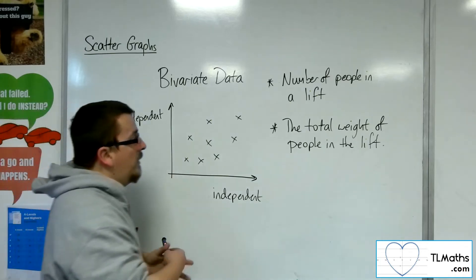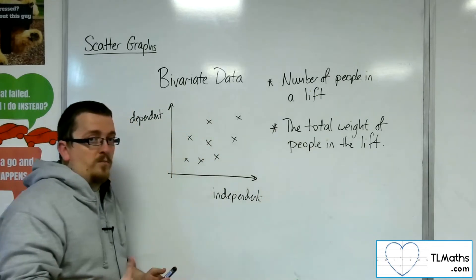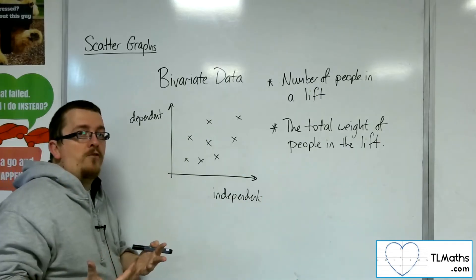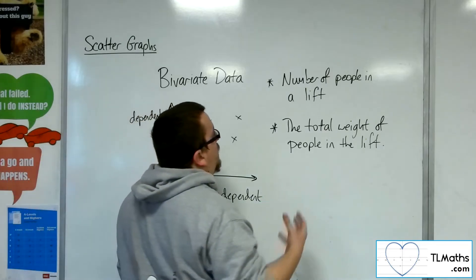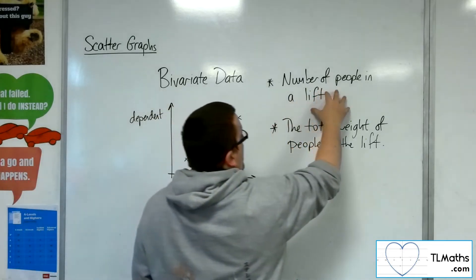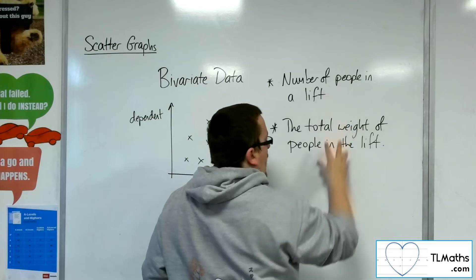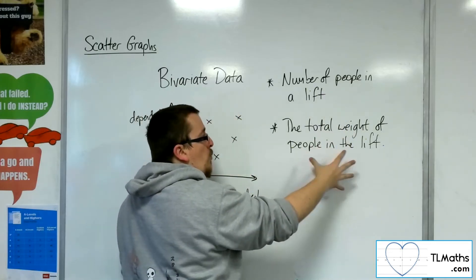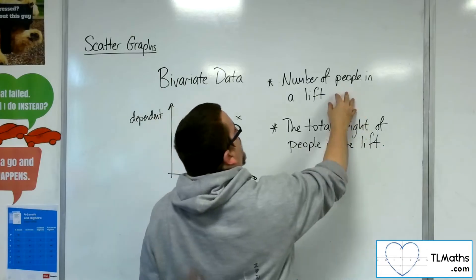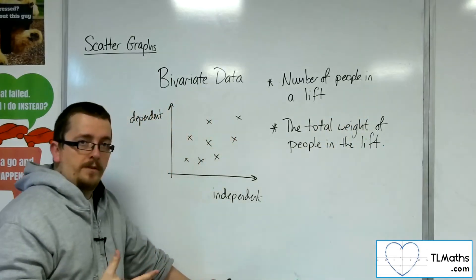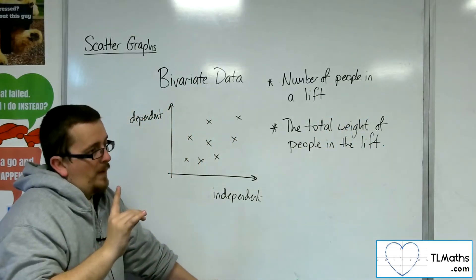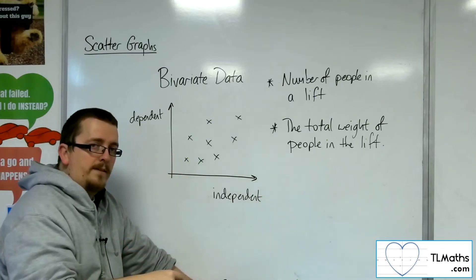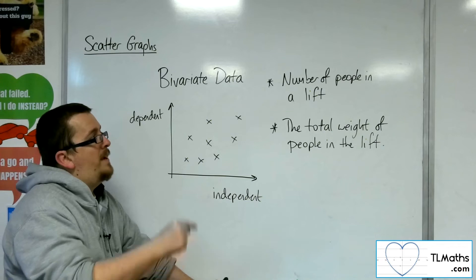OK, so this in context problems is usually quite straightforward to figure out which one should be which. So does the number of people in the lift depend on the total weight or does the total weight depend on the number of people in the lift? Now think about that for a moment. Does the number of people in the lift depend on the total weight or does the total weight depend on the number of people?